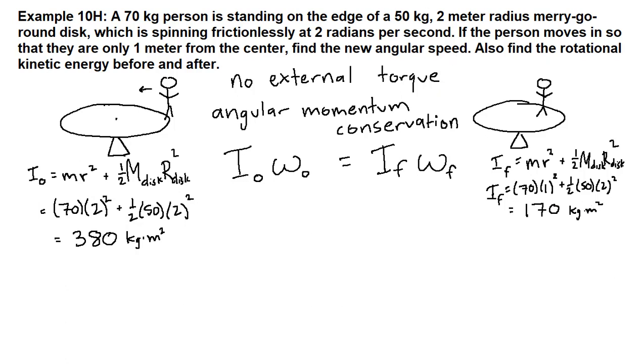We can plug in the numbers that we have. At the beginning of the problem we have the moment of inertia of 380 and we have the 2 radians per second as the beginning angular velocity. At the end of the problem we have the moment of inertia of 170 and we're being asked to solve for the new angular speed. Nothing too tricky here - we know three of these four things and we'll be able to solve for the last one.